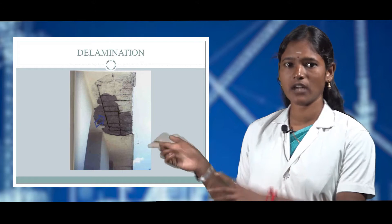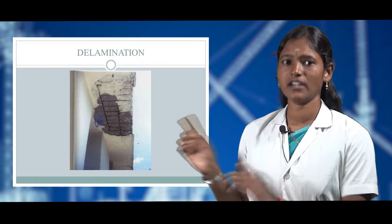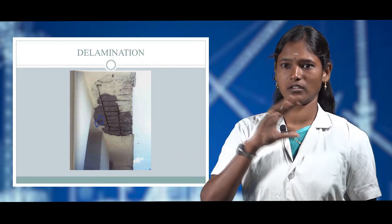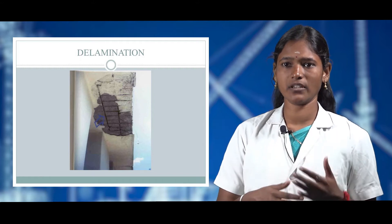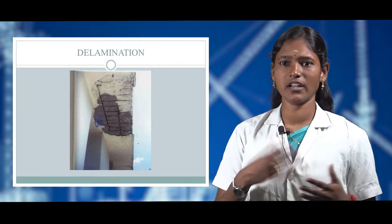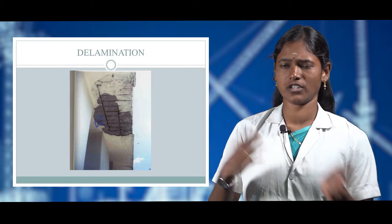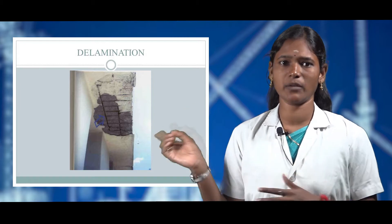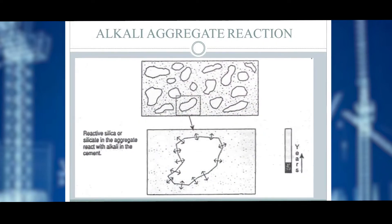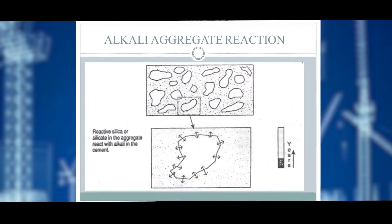The causes for delamination, as marked in the slide, include corrosion and external agents such as alkali-aggregate reaction or sulfate attack. Due to these causes, the concrete spalls and the inner reinforcement surface becomes visible.